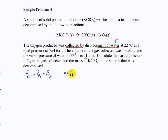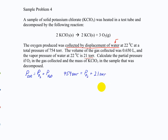The total pressure is the sum of the partial pressures — in this case the pressure of oxygen and the pressure of water. So 754 torr equals the partial pressure of oxygen plus the partial pressure of water, which is 21 torr. If it's not given in the problem, you can look it up on a table. This tells us that the partial pressure of oxygen is 733 torr.